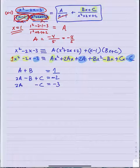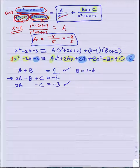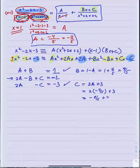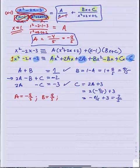Since we already know a from the cover-up, we can use equations 1 and 3 without even using the middle equation. From equation 1: b equals 1 minus a, which is 1 plus 4 fifths, giving 9 fifths. From equation 3: c equals 2a plus 3, which is negative 8 fifths plus 15 fifths, giving 7 fifths. So a is negative 4 fifths, b is 9 fifths, and c is 7 fifths.